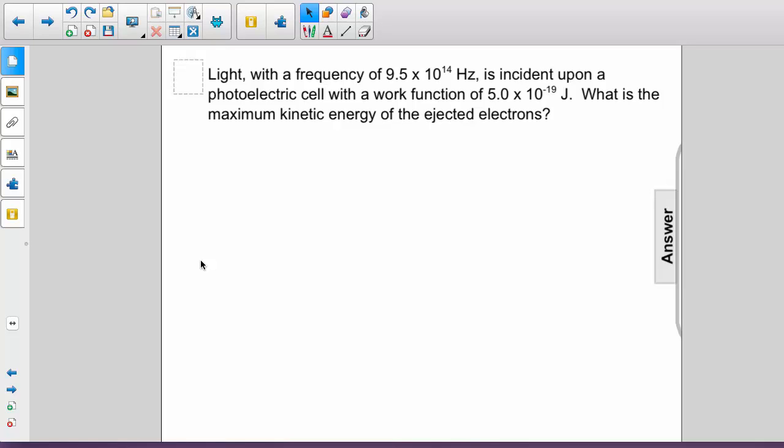Light with a frequency of 9.5 times 10 to the 14 hertz is incident upon a photoelectric cell with a work function of 5 times 10 to the negative 19 joules. What is the maximum kinetic energy of the ejected electrons?